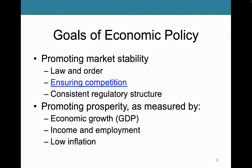Moving beyond market stability, we can think about the promotion of prosperity as a goal of economic policy. This is more tangible — we can measure it, however imperfectly. We could consider economic growth in the form of GDP, gross domestic product — the size of the economy, what the U.S. economy produces in the course of a year. The U.S. economy currently moves around 24 to 26 trillion dollars a year, a number that's not very fathomable for most of us.